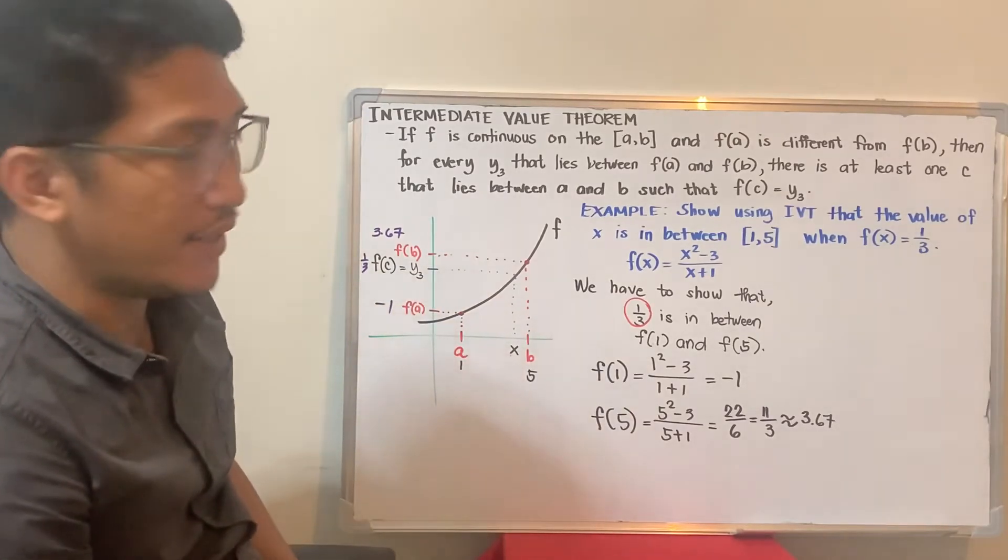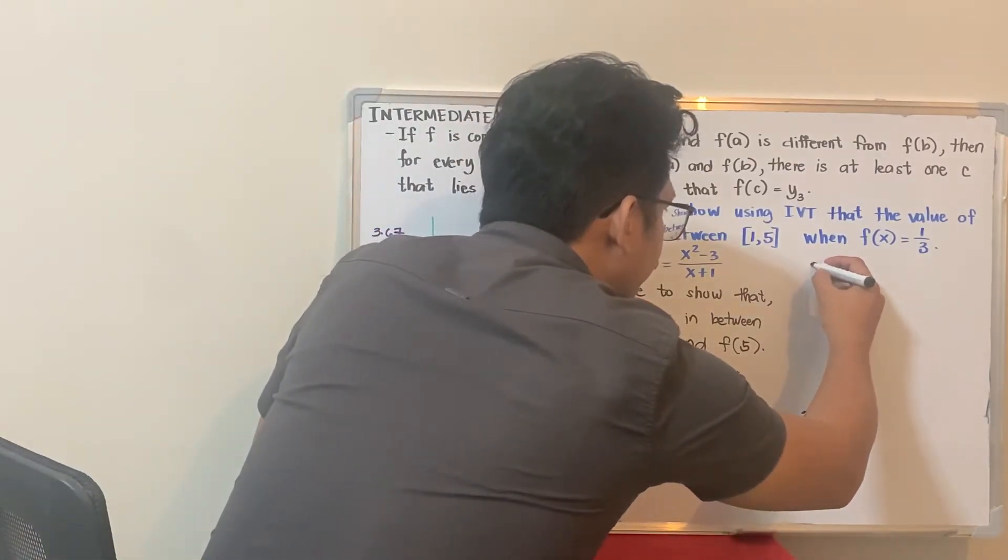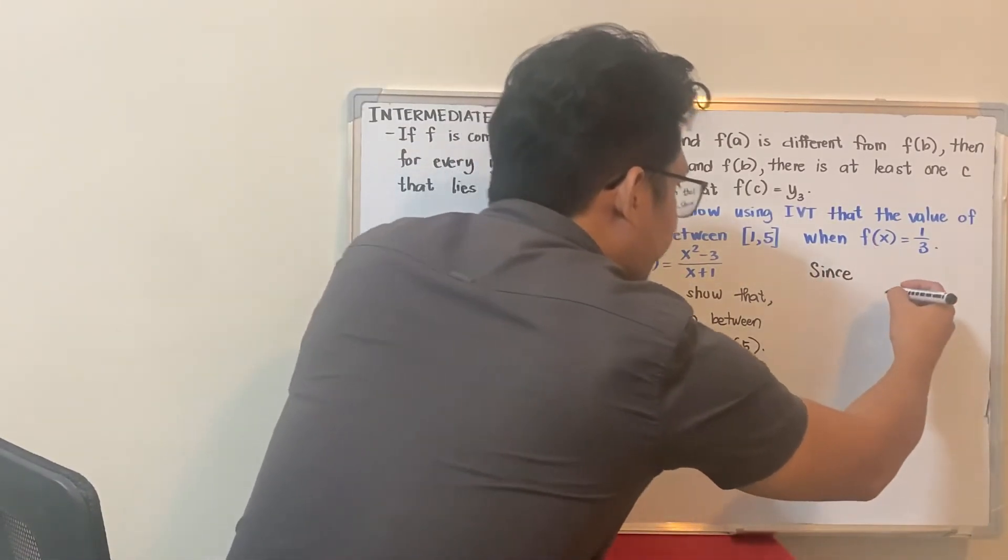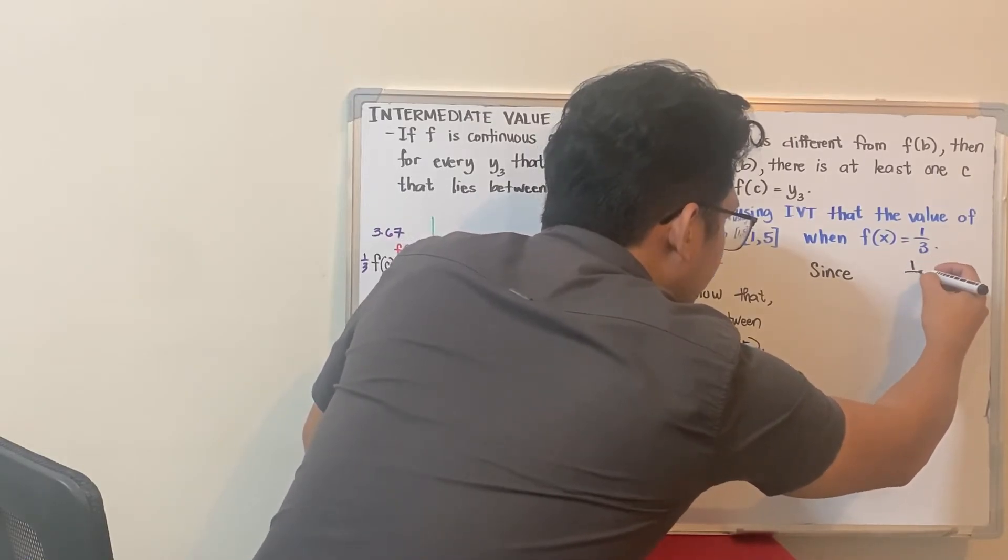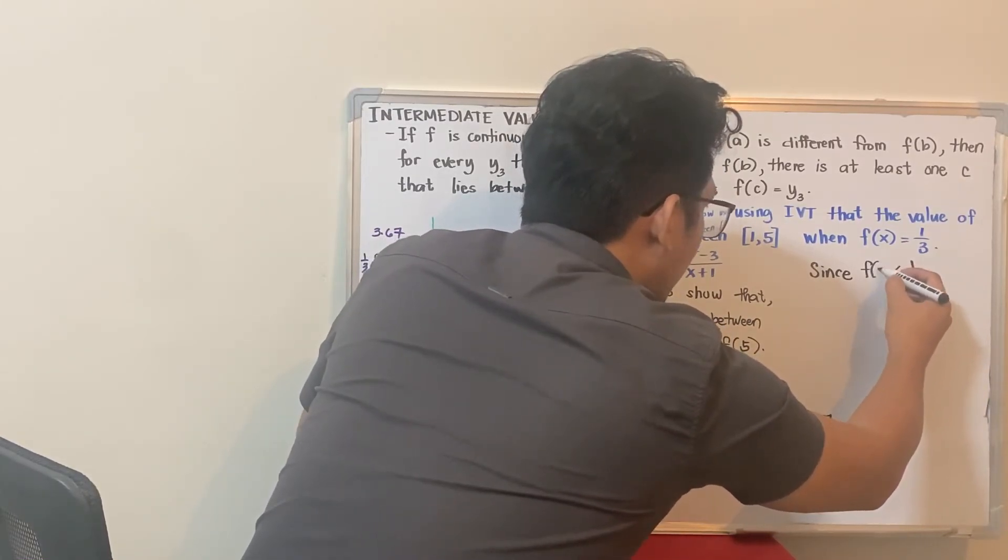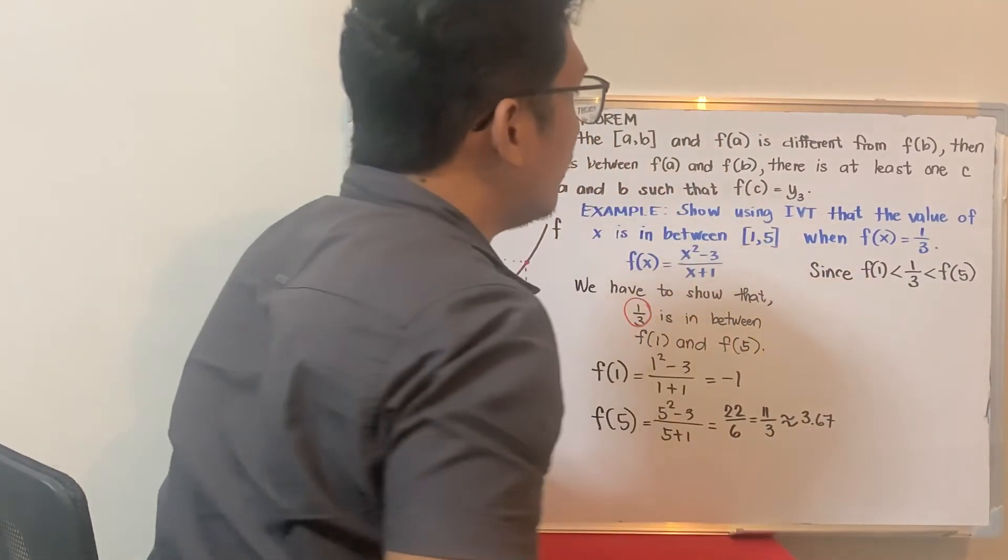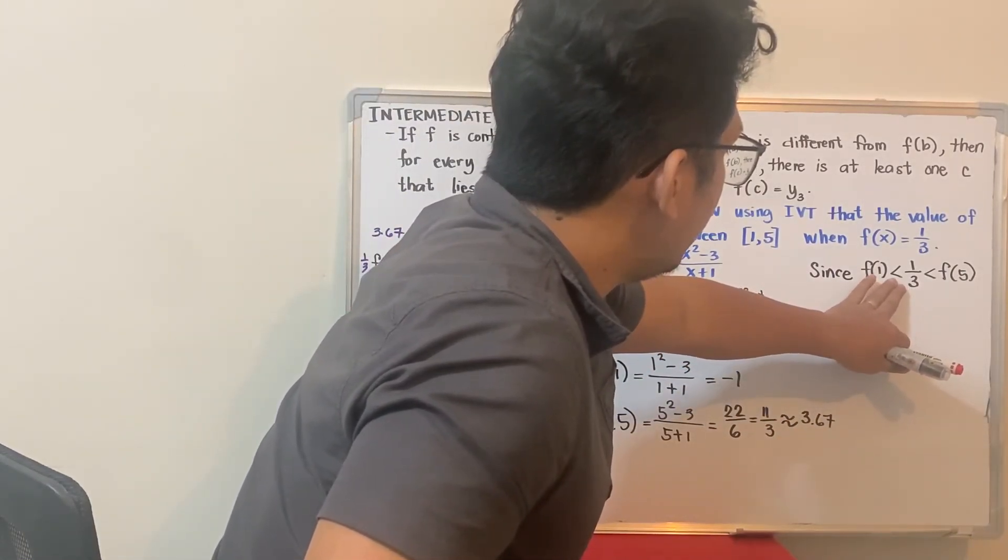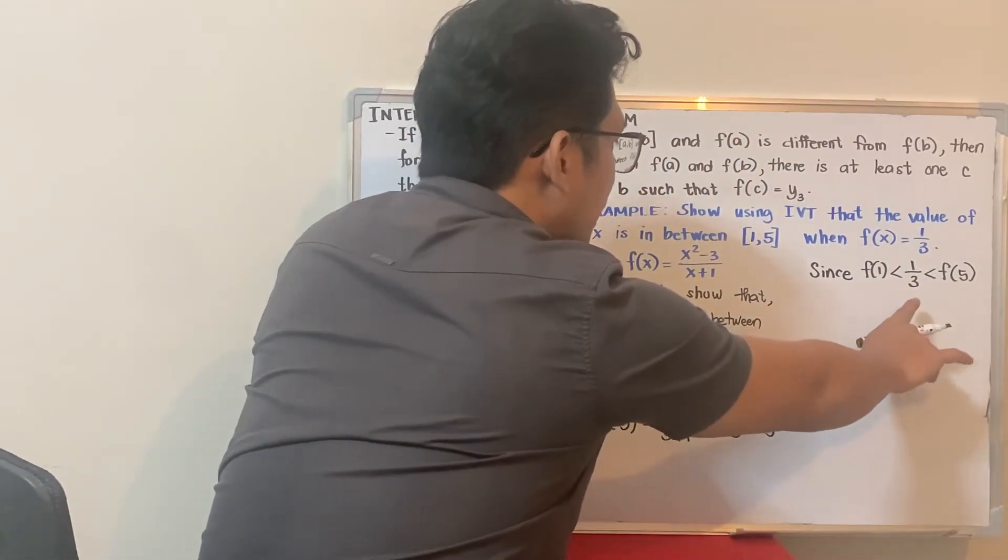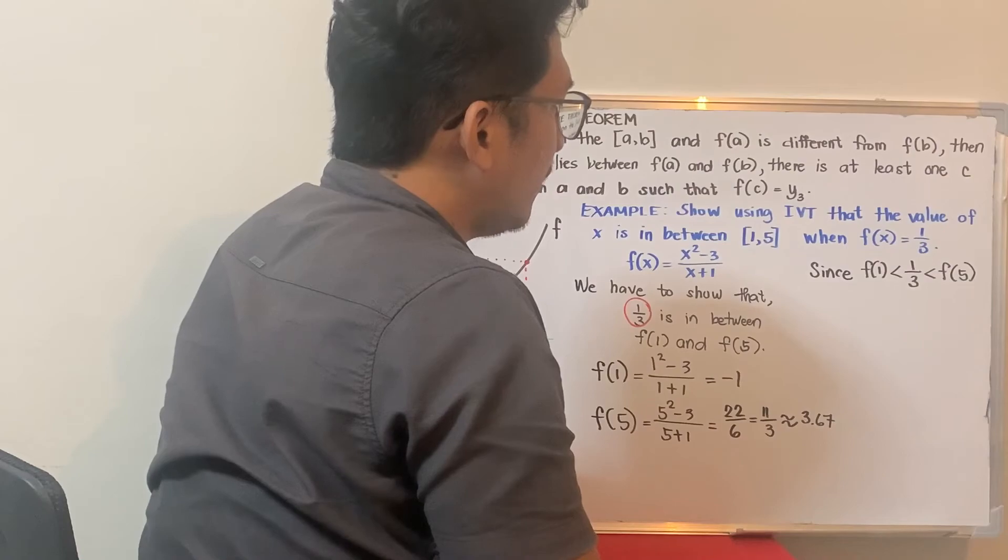Since 1/3 is in between F of 1 and F of 5, since 1/3 is greater than negative 1 but less than 3.67, then 1/3 is greater than F of 1 and less than F of 5.